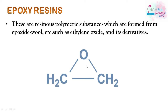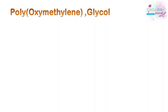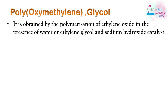Ethylene oxide has the formula CH2-O-CH2, which is a cyclic product. Its important polymer is polyoxymethylene glycol, obtained by polymerization of ethylene oxide in the presence of water or ethylene glycol.